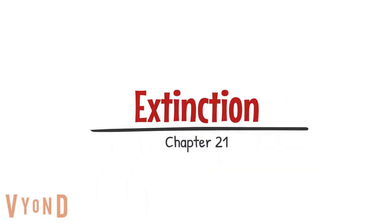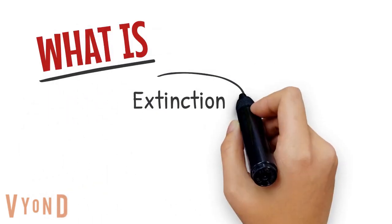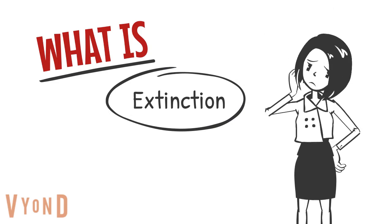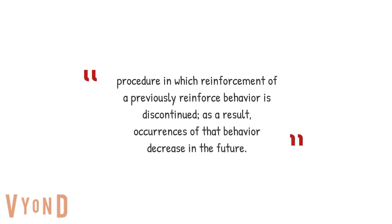Chapter 21: Extinction. So what is the definition of extinction? According to the text, extinction is a procedure in which reinforcement of a previously reinforced behavior is discontinued, and as a result, occurrences of that behavior decrease in the future. In other words, a behavior that was previously reinforced is no longer being reinforced.